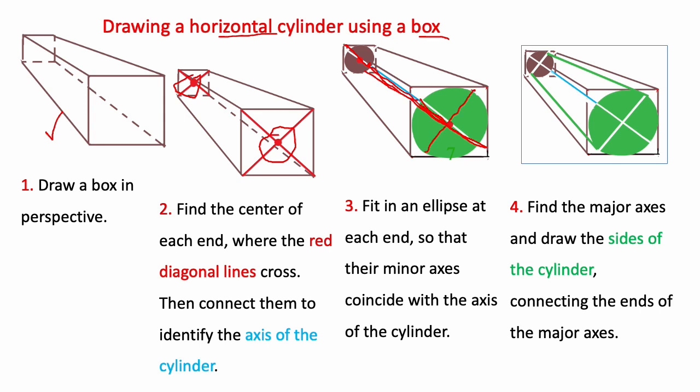A common mistake is to make the ellipse upright but that would be wrong. To find the sides of the cylinder you connect both major axes together and then get rid of the construction lines that you don't need.